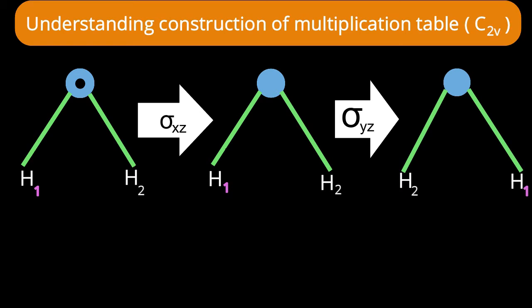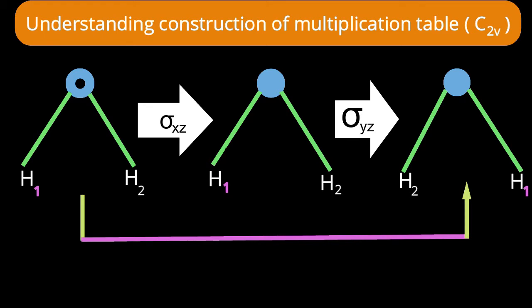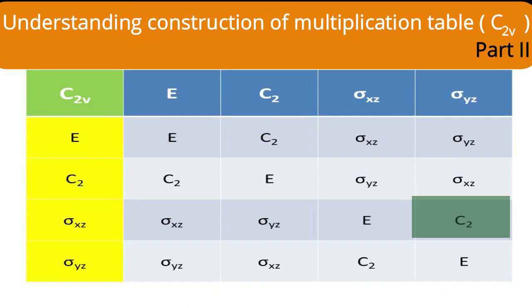Now performing σyz — the plane perpendicular to the molecule — on that result: hydrogen one on the left moves to the right side, while the nose, already away from us, remains away from us. In the final structure, hydrogen one is to the right and the nose is away from us. Comparing to the original, performing a C2 rotation — 180-degree rotation — changes the hydrogen positions and sends the nose away. Therefore, σxz × σyz = C2, which the multiplication table confirms.